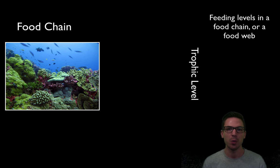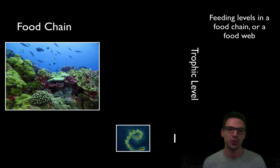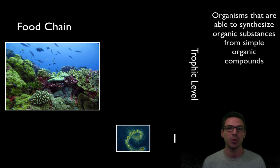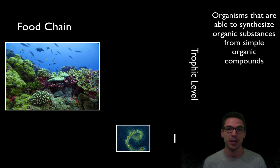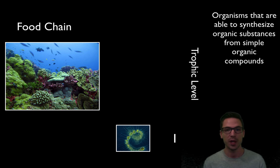Starting at the bottom, trophic level number one is always going to be made up of organisms that we call producers. Here's a picture of algae, which is a type of phytoplankton. Phytoplankton are always the primary producers we think about — they're producing most of the food in our marine ecosystems. A producer is any organism able to synthesize organic substances, like carbohydrates or sugars, from simple inorganic compounds, using energy typically from the sun. Not all producers are photosynthetic — we can't forget ecosystems at hydrothermal vents where chemosynthetic bacteria use chemical energy from those vents to make their food, rather than solar energy.